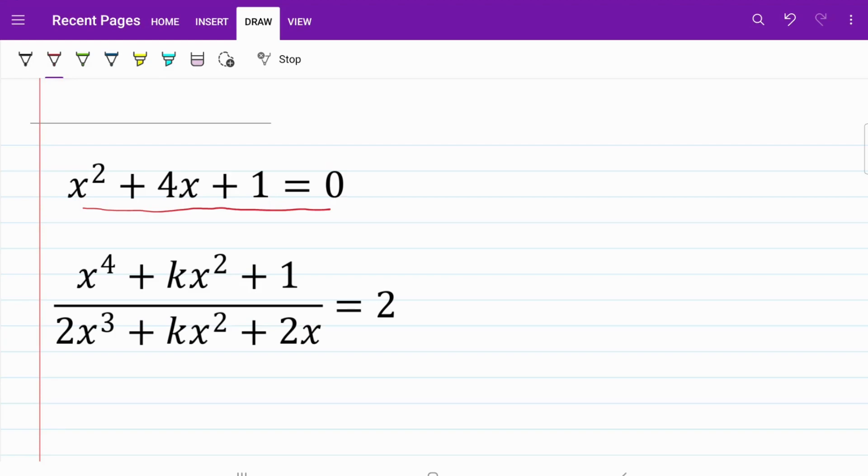So we need to find a different approach. And if you take a closer look at the fraction, we notice that both on the numerator and the denominator, the unknown k is actually the coefficient of x squared. So if we want to find k, we need to find a way to get rid of x squared.